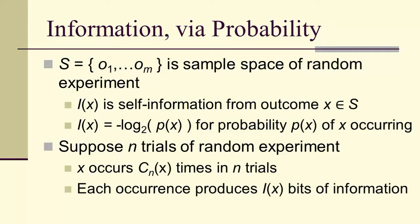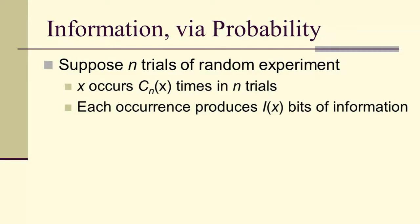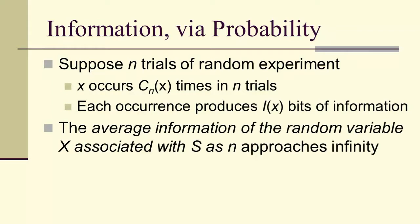Each occurrence produces I(X) bits of information. And so now we can actually figure out what the information is for this experiment. We simply take the average information of the random variable associated with S as N approaches infinity.